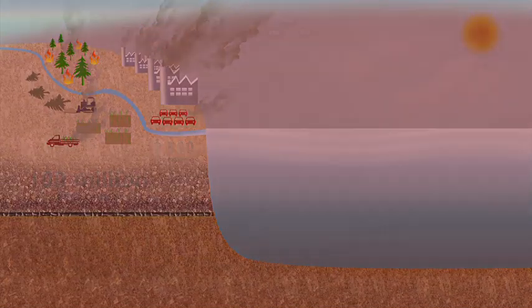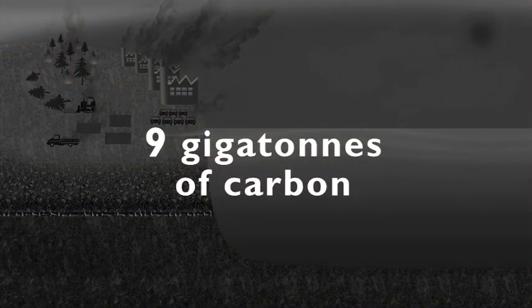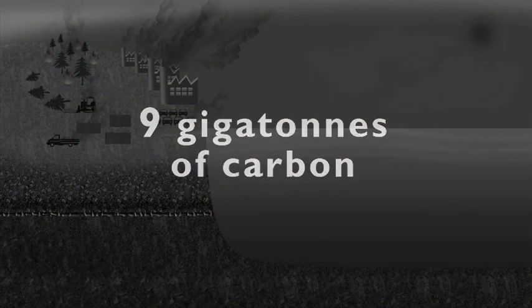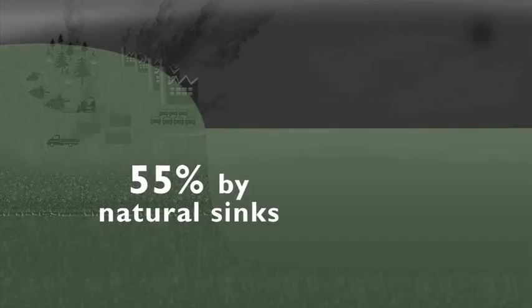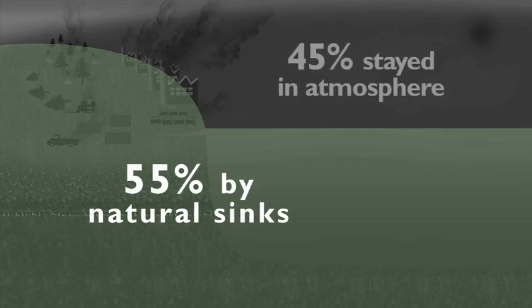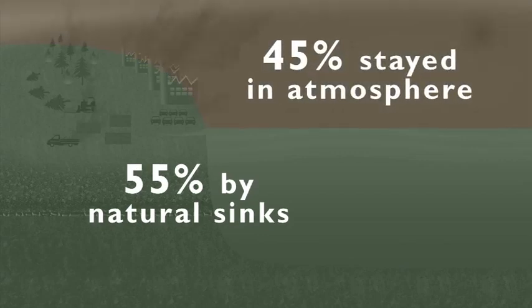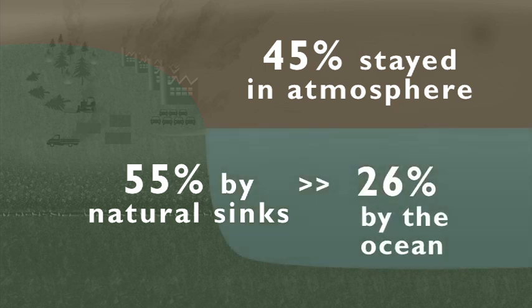Recent studies have shown that nine gigatons of carbon were released into the atmosphere by the burning of fossil fuels and deforestation in 2007 alone. Of this, only 55% was absorbed by natural sinks. The remaining 45% stayed in the atmosphere. 2.3 gigatons, or 26% of this absorption by natural sinks, was done by the ocean alone.